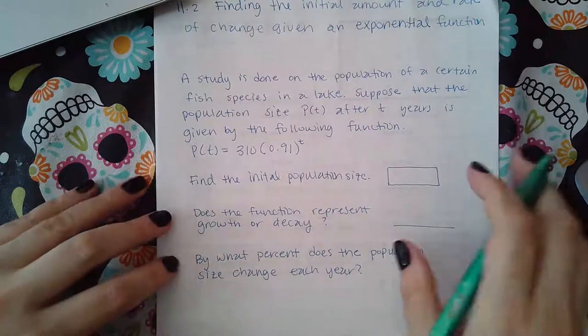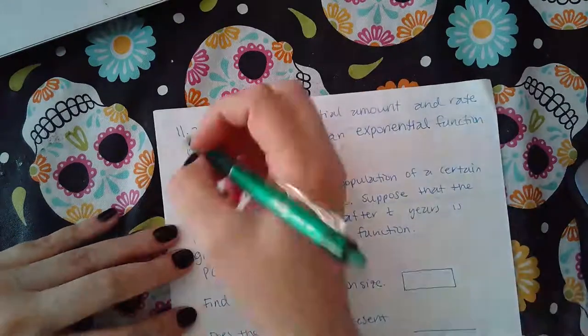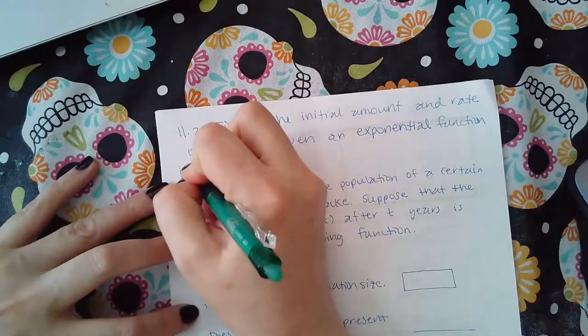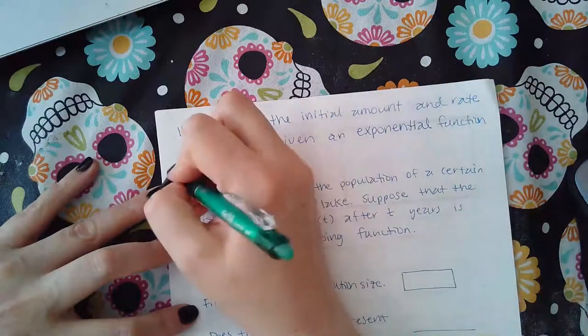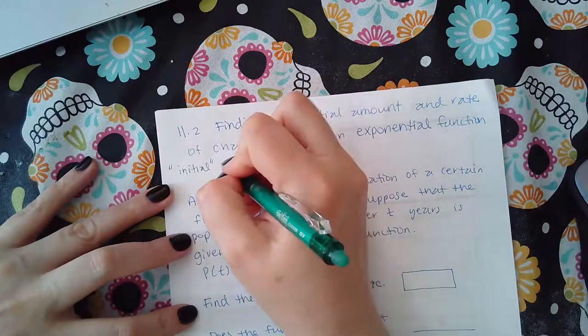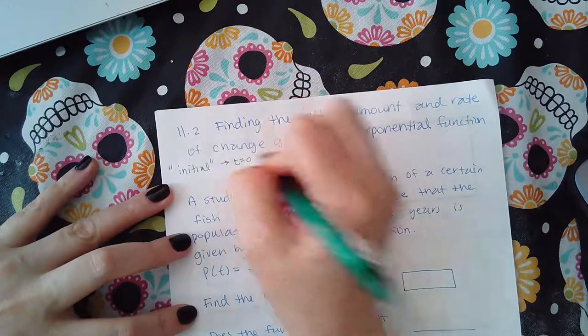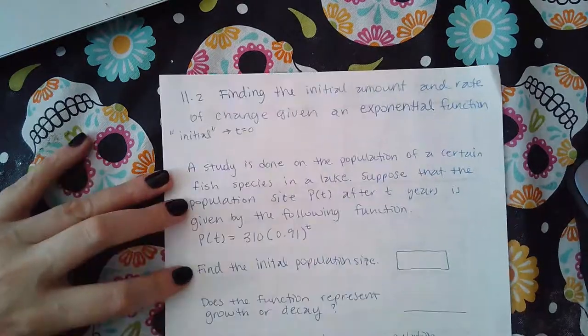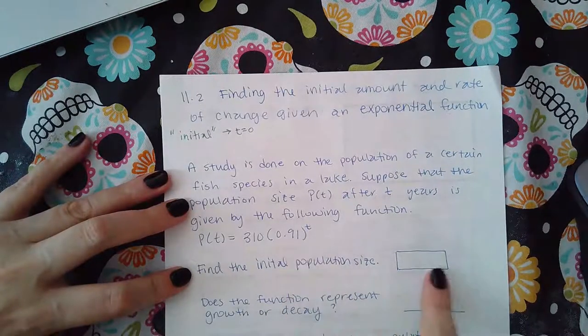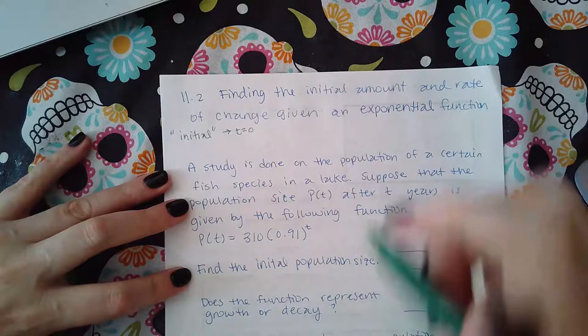You've got two different scenarios happening. Whenever they say the initial amount, that means t equals zero. So as long as I plug in t equal to zero, I'll be able to find this initial amount.